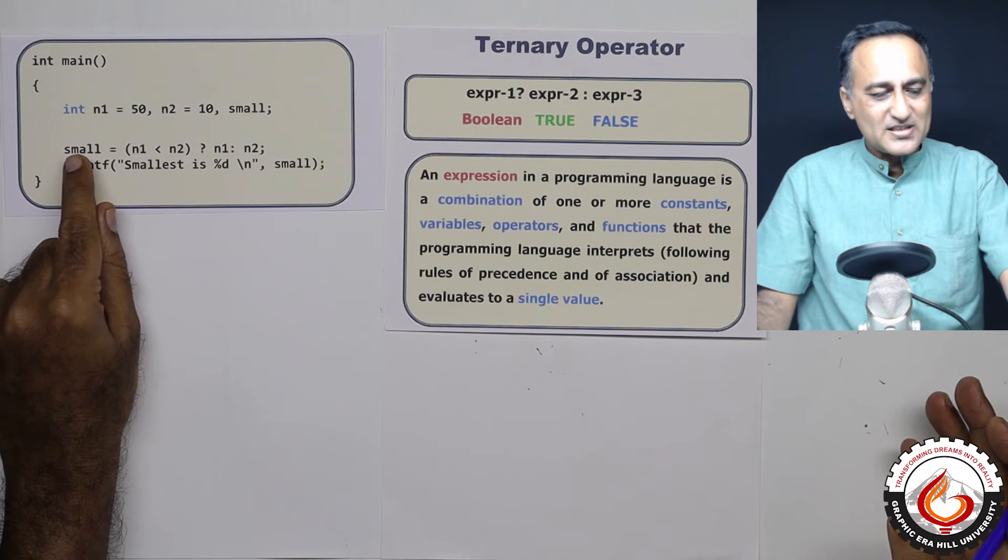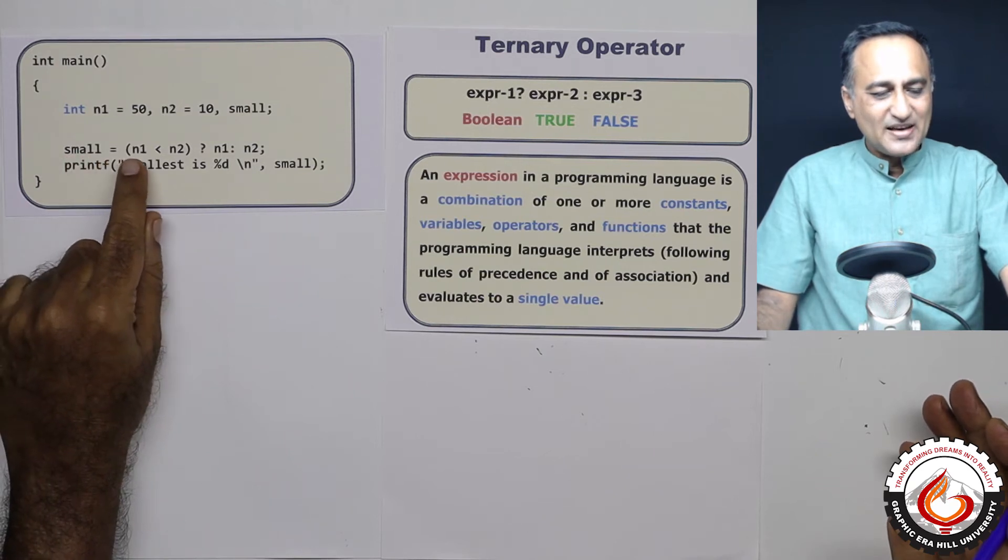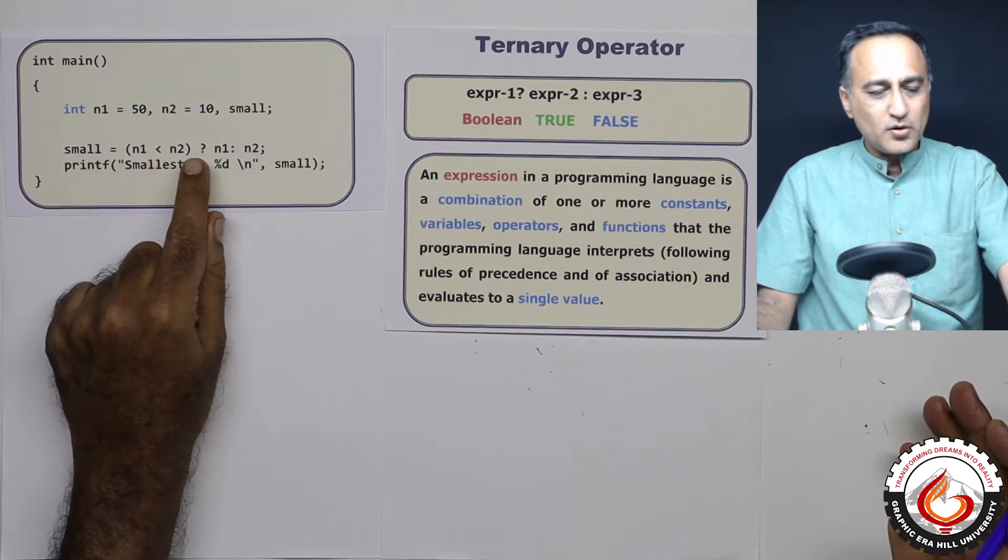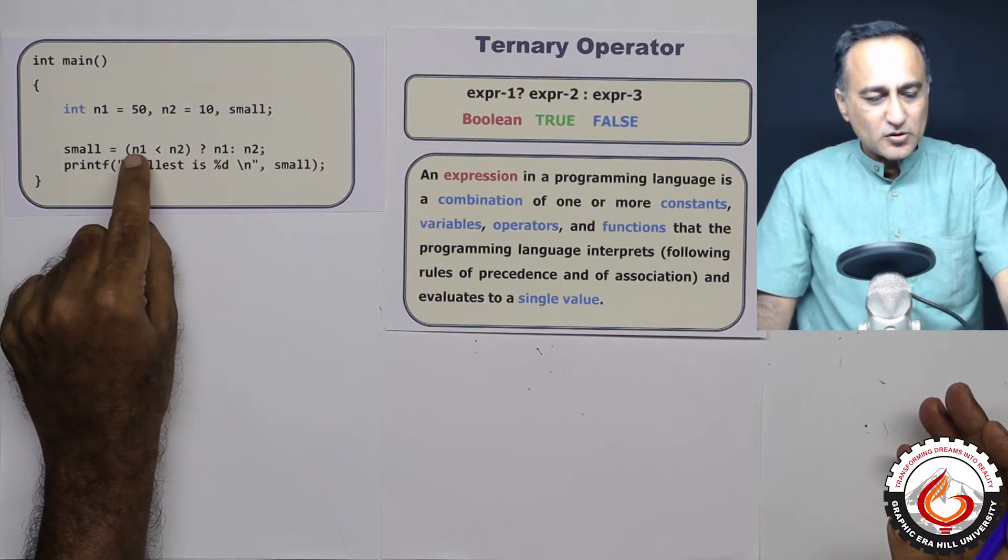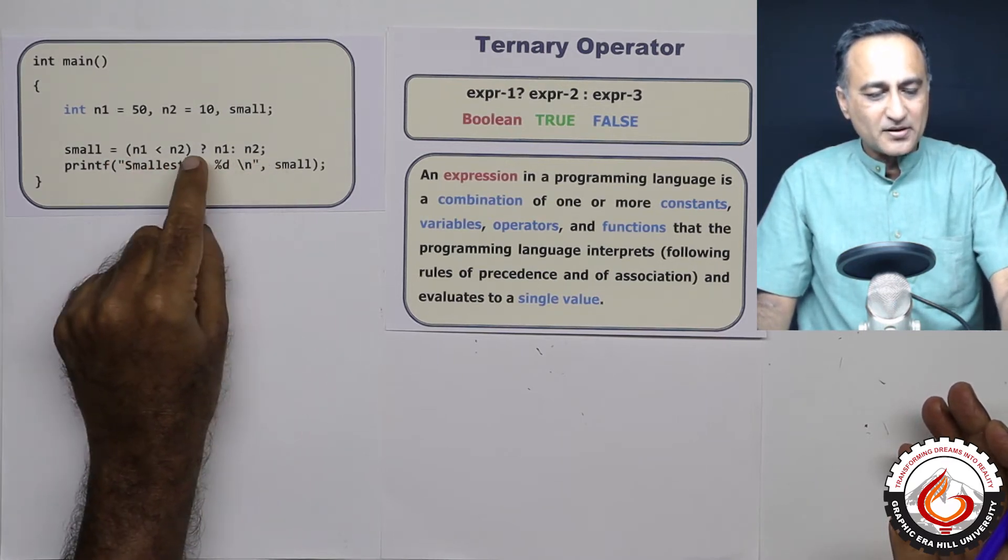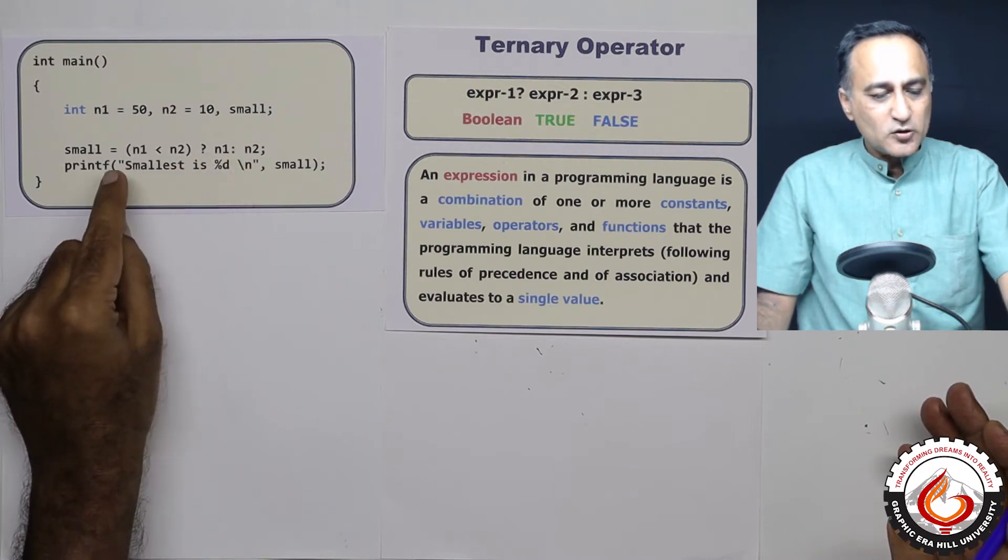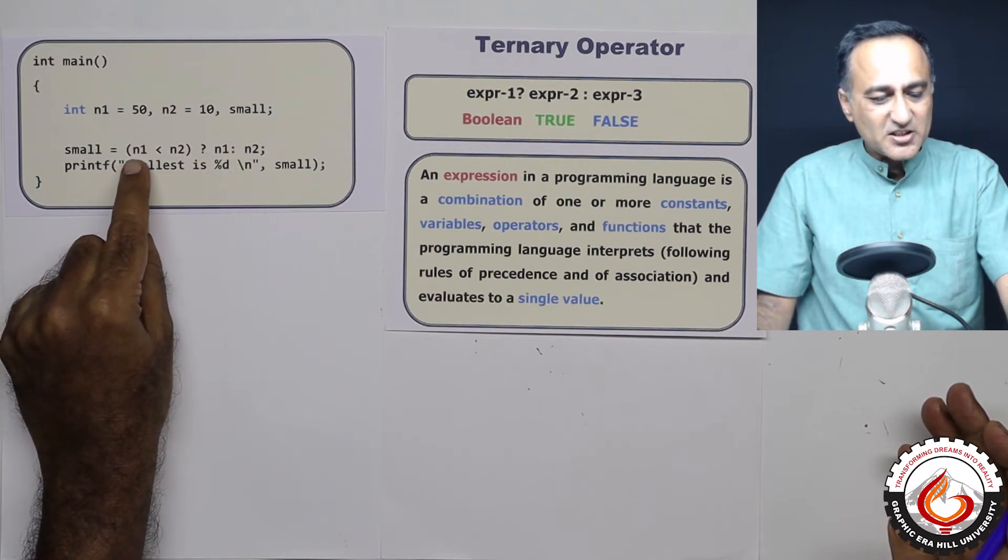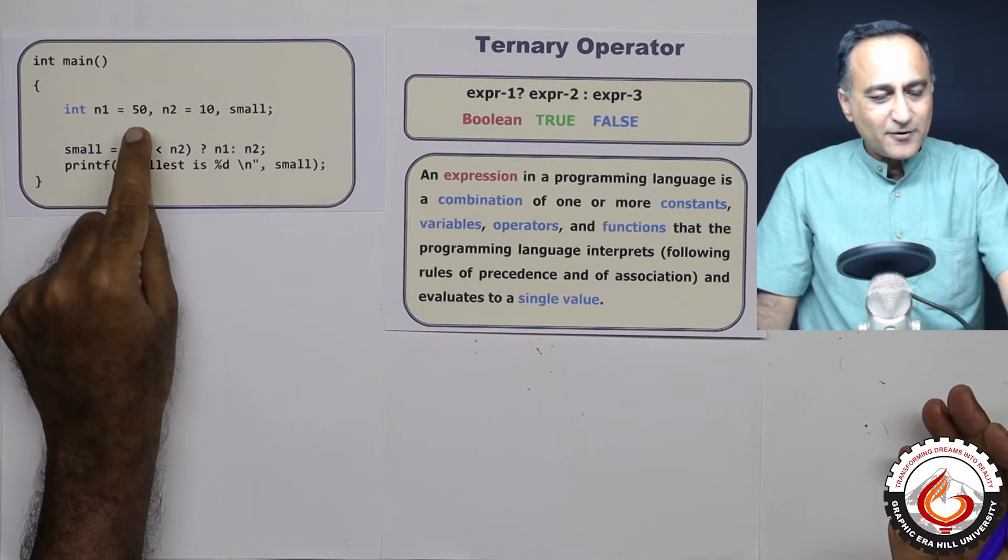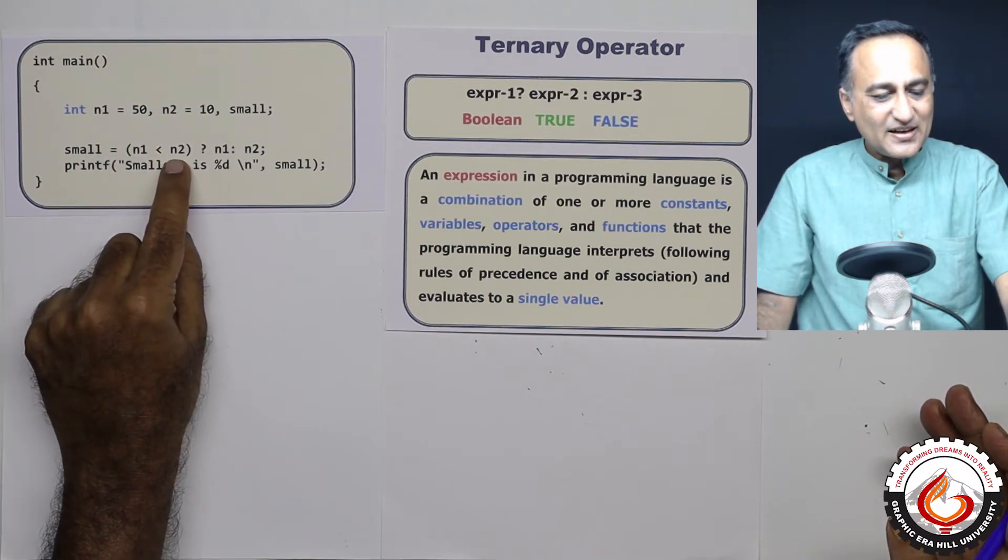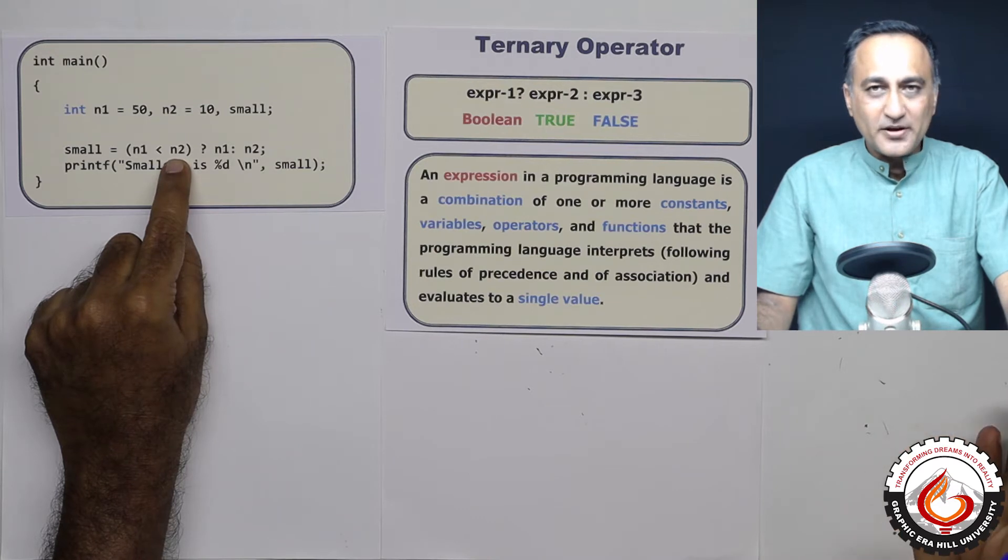What I have done is I have said small is assigned n1 less than n2 question mark n1 colon n2. So this is actually the ternary operator, the question mark colon. So what this does is it checks whether n1 is less than n2. So is 50 less than 10, it can be true or it can be false.